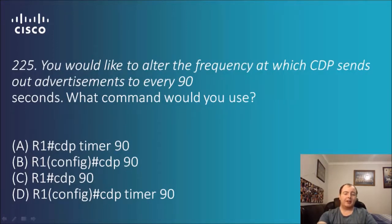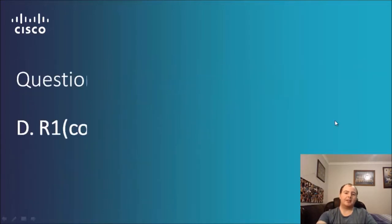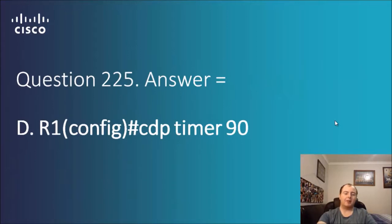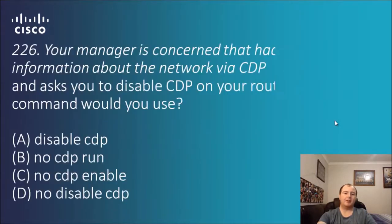Question 2.25: you'd like to alter the frequency at which CDP sends out advertisements to every 90 seconds — what command would you use? We need to be careful about which mode we're in. The options are CDP timer 90, CDP 90, CDP 90 in global config mode, and CDP timer 90. You have to be in global config mode — the answer is D: router1(config)# CDP timer 90.